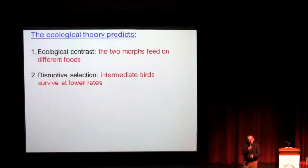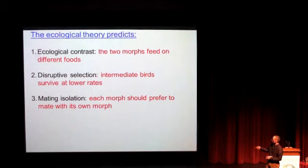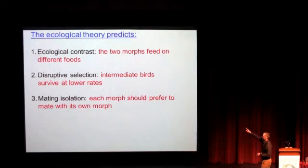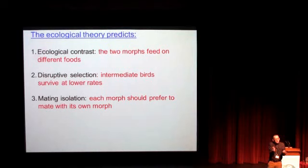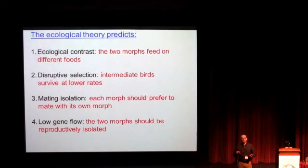Fourth, if you have disruptive selection meaning intermediates don't survive, and relatively rare production of intermediates, you would expect low gene flow between the two morphs — they should be reproductively isolated — and maybe we can detect that with neutral markers. So what I want to do is examine each of these hypotheses in this one population, and you'll see I'm going to test those same questions in the other two systems as well.